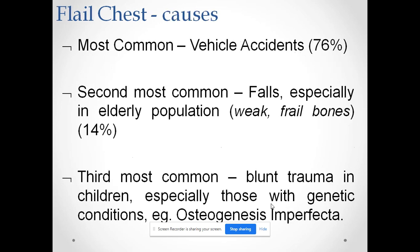The most common cause of flail chest is a vehicle accident. The second most common cause is a fall, especially in the elderly population. The third most common cause is blunt trauma in children, especially those with a genetic condition such as osteogenesis imperfecta, in which the bone is abnormally formed, very weak, and prone to fracture.